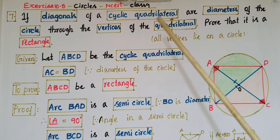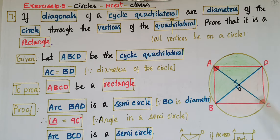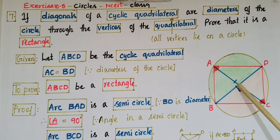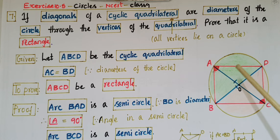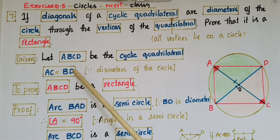We know that a cyclic quadrilateral means all the vertices of the quadrilateral lie on a circle. So, let ABCD be the cyclic quadrilateral where all the vertices lie on this circle, and let O be the center of the circle, and BD and AC are diameters of the circle. We know that diameters of the same circle are equal, so AC is equal to BD. These two are diameters as well as diagonals of this quadrilateral, so AC is equal to BD.